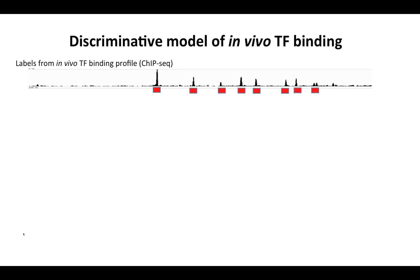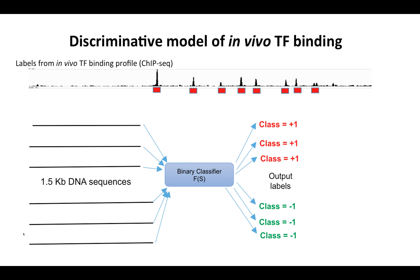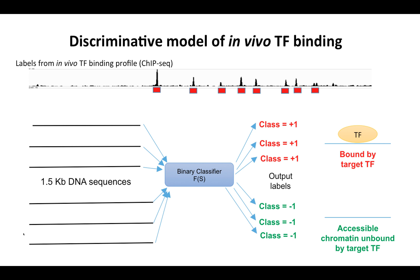To do this, we're going to set up a supervised task where our labels come from in vivo transcription factor binding profiles as measured by an experiment like ChIP-seq. The inputs to our model, which is going to be a binary classifier, are going to be DNA sequences, and the outputs will be plus one if the region is bound by the target transcription factor, and minus one if the region is accessible in the particular cell type but not bound by the transcription factor, which usually means that the region lacks the necessary sequence pattern or motif that the transcription factor has an affinity to.